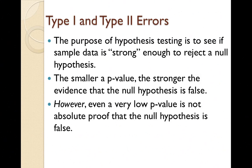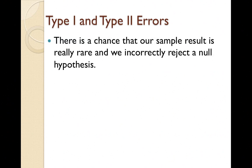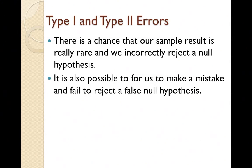Even a very low p-value is not absolute proof that the null hypothesis is false. It's possible for us to make a mistake and reject a true null hypothesis — meaning our sample result was truly a rare result and we used it to incorrectly reject a null hypothesis we shouldn't have. It's also possible to make the opposite mistake and fail to reject a false null hypothesis.